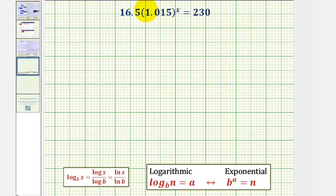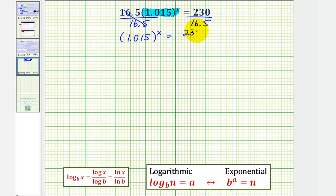So we'll begin by isolating the exponential part here by dividing both sides by 16.5. So we have 1.015 raised to the power of x equals this quotient here. We want to get the exact solution in terms of a logarithm, so we don't want to convert this to a decimal and round. We'll leave this as a quotient.